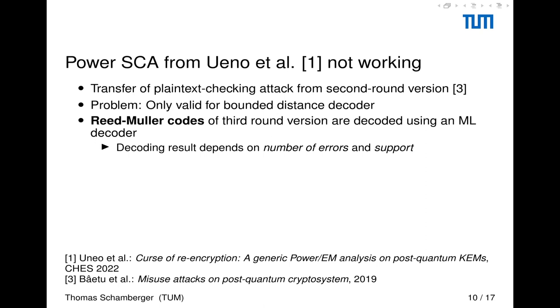This brings us to our first contribution of the paper. However, we observed that a power side channel attack from Uneo et al. published at CHES 2022 is not working. And this is the case as they make use of an attack by Batu et al. which consists of a plaintext checking oracle. But this was published for the second round version of HQC. And there's a problem. This attack strategy is only valid in the bounded distance decoder case. And for our Reed-Muller codes of the third round version, those are decoded using a maximum likelihood approach. Therefore, the decoding result does not only depend on the number of errors, but also on the support. So it can be that even though we reduce the amount of errors, we still decode to another codeword.